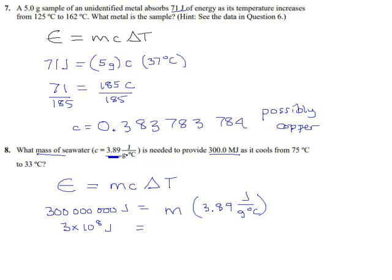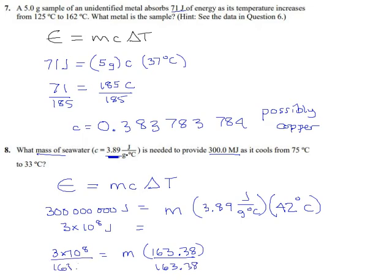And the temperature change, well, we're going from 75 down to 33. That's a 42 degree drop. So, on this side, 3 times 10 to the 8. On the right side, M can just sit for a moment. 3.89 times 42, that's something we can do. Combine those into one number. We get M times 163.38. And now if we want M by itself, and it's multiplied by 163, we solve that by dividing both sides by 163.38.